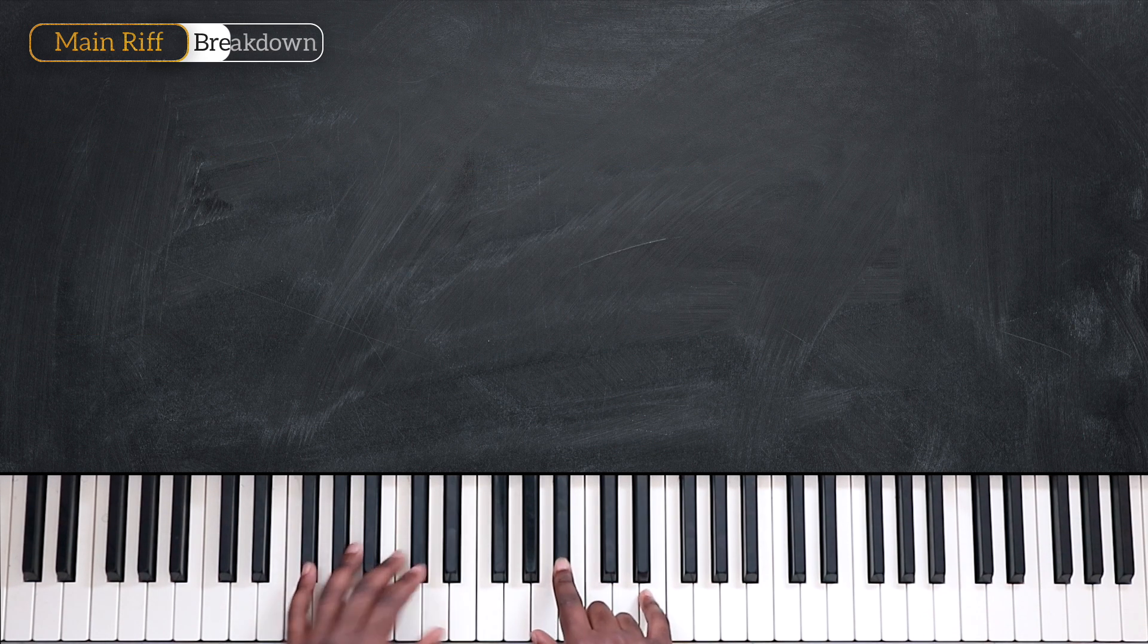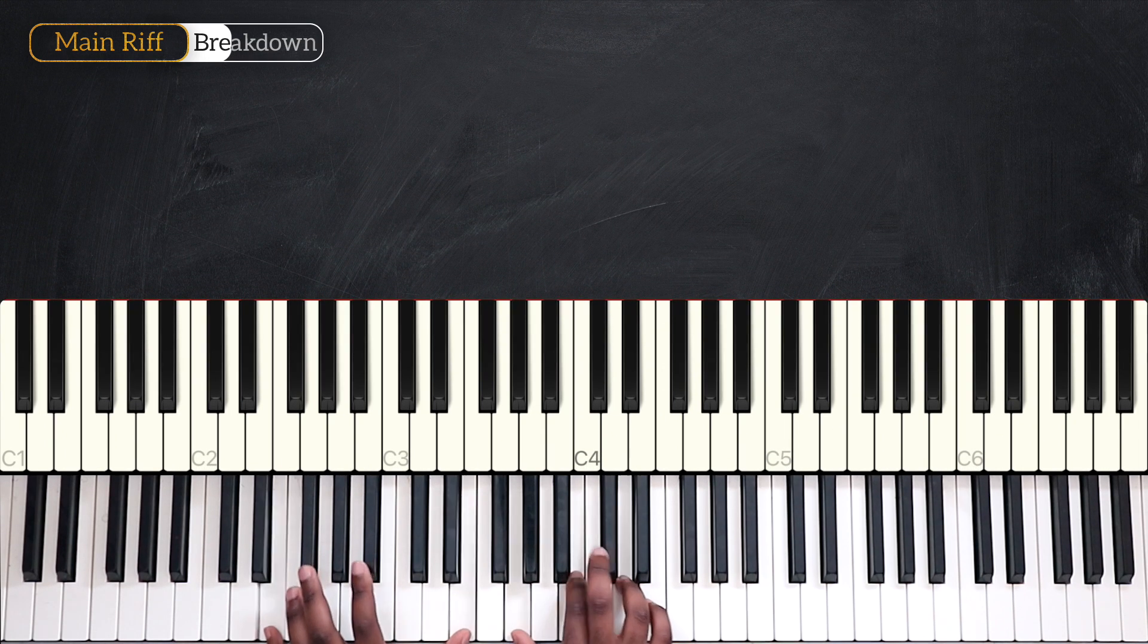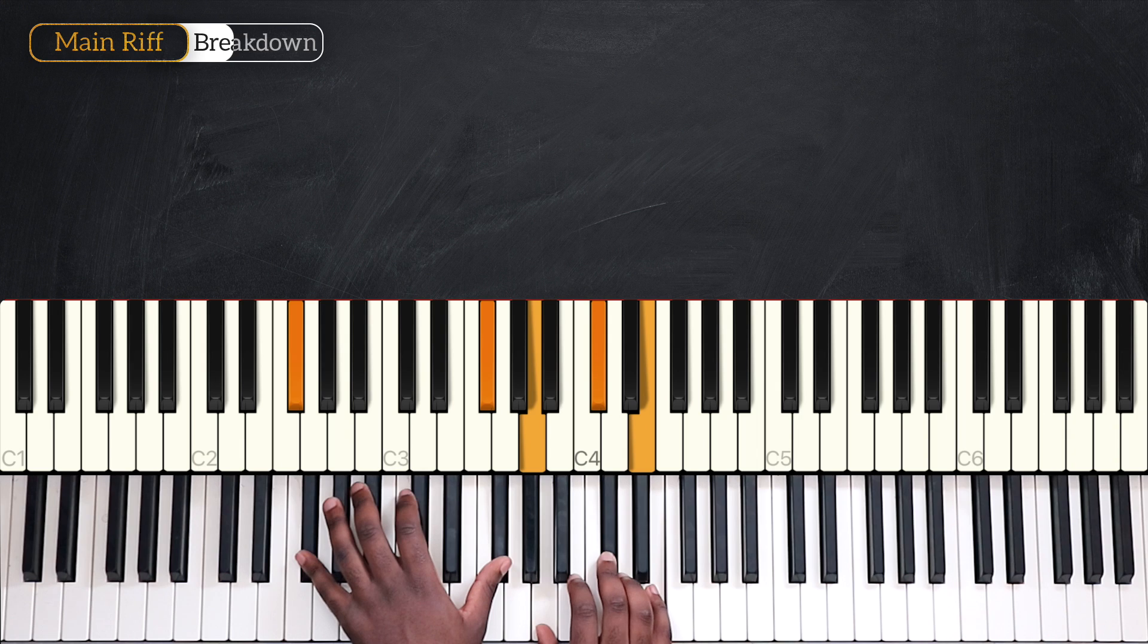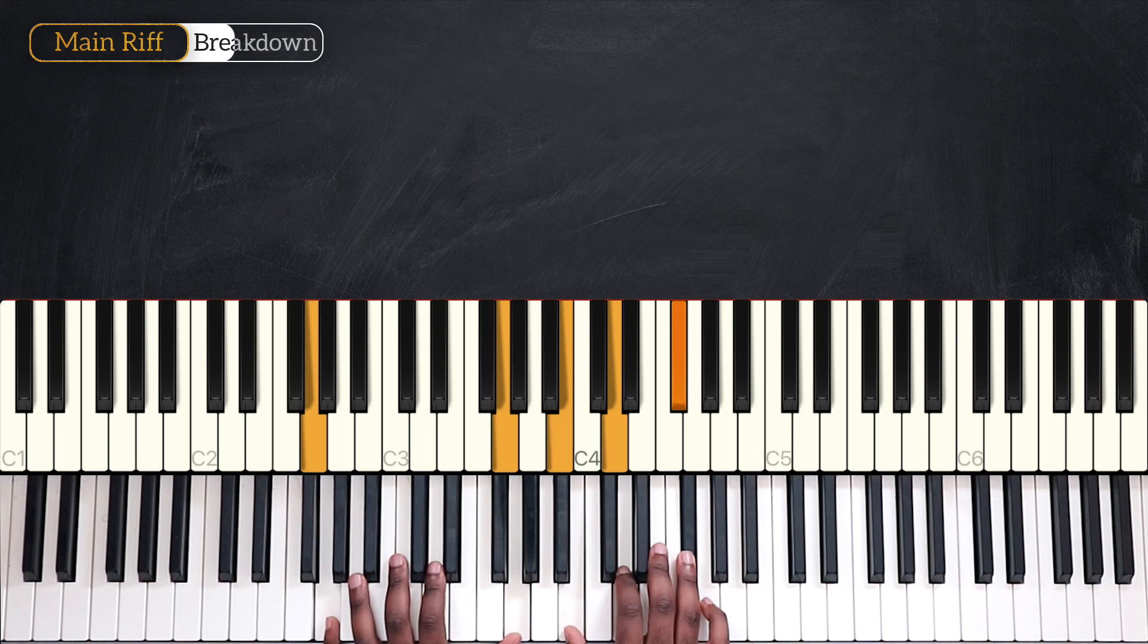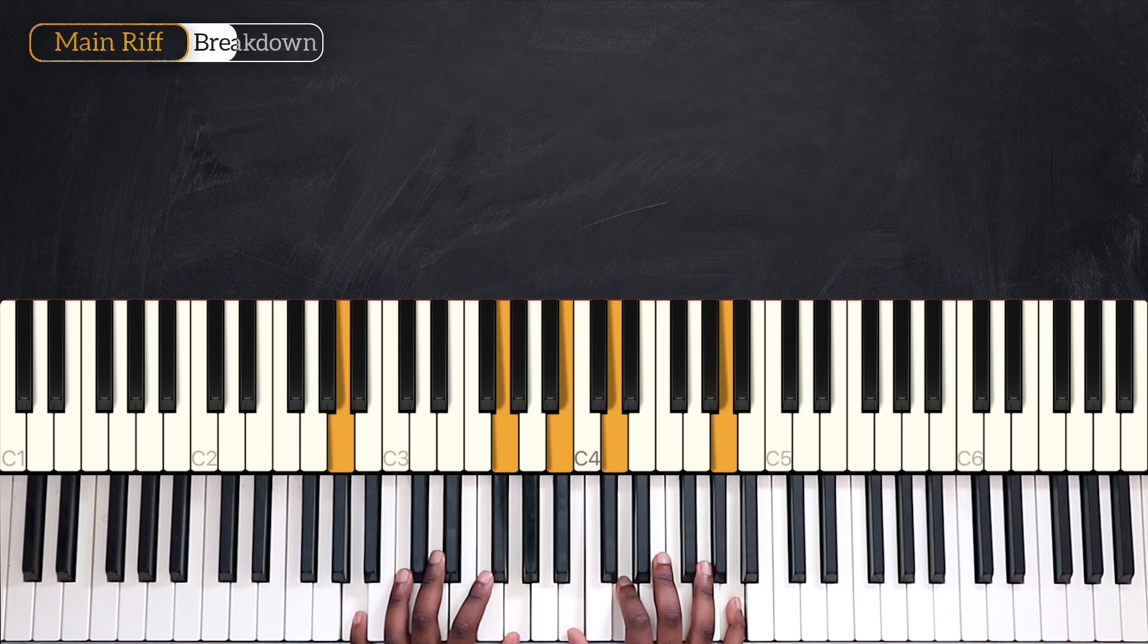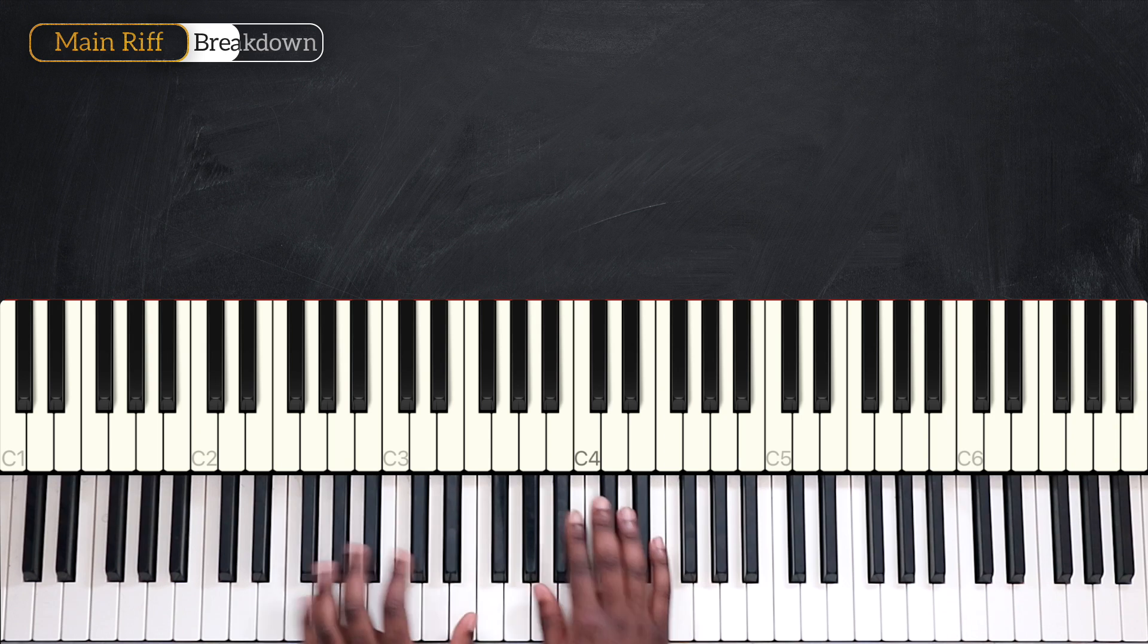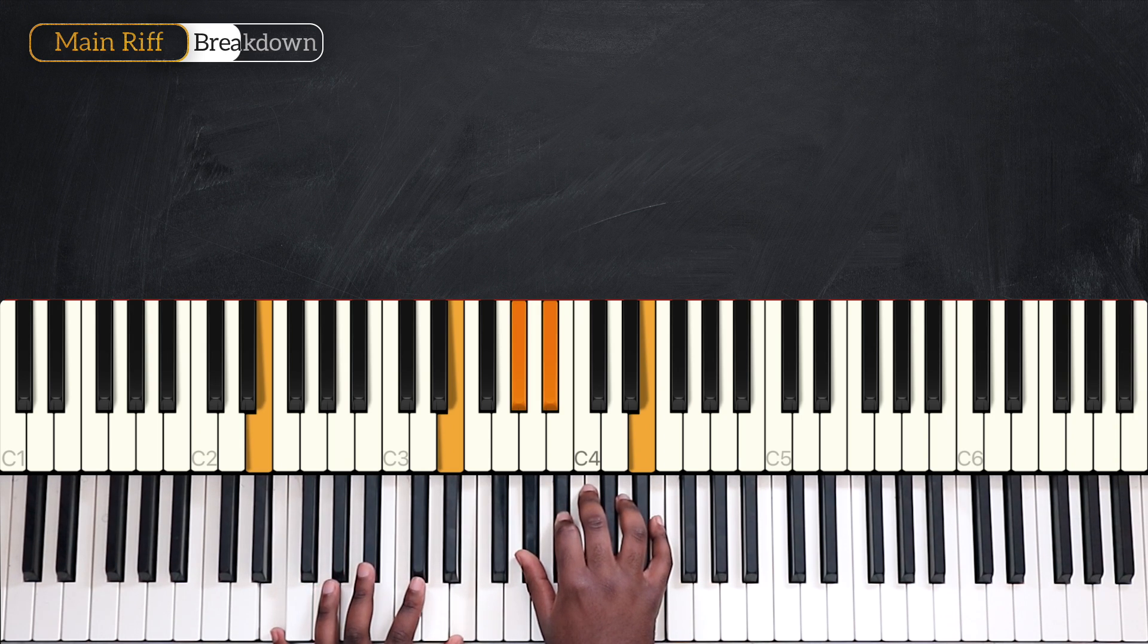All right, let's recap. E minor 7, F sharp minor 7, G major 7, A11, and then B minor 11, ending the first part of the main riff with E sharp 11.